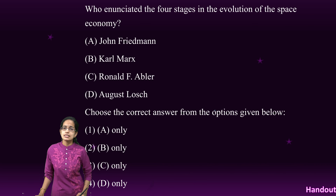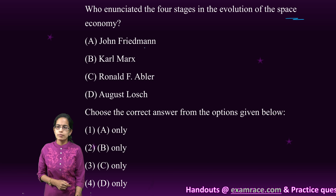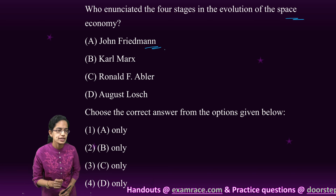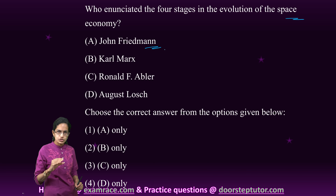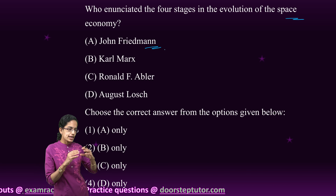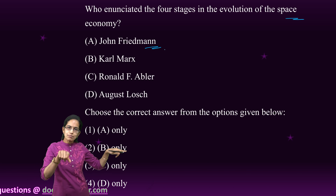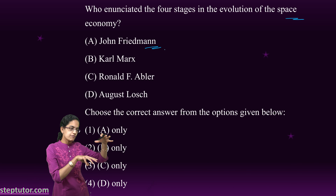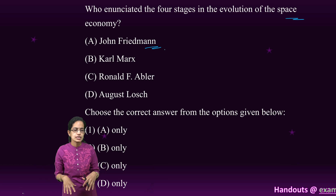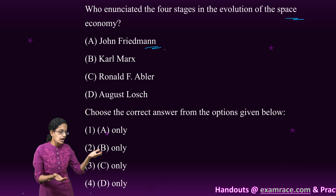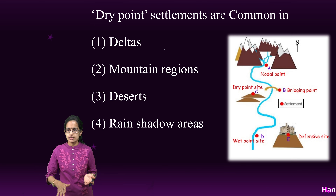Who talked about four stages of evolution in the space economy? John Friedmann in his core-periphery model described: first, a pre-industrial society with a localized economy; second, the emergence of a core and surrounding periphery; third, dispersion of economic activities; and finally, the emergence of a spatially integrated system.